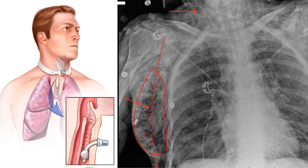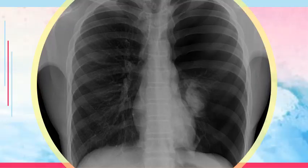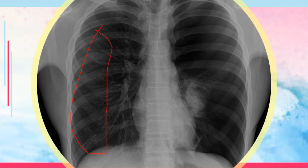A left pneumothorax shows abnormal deposits of air in the thoracic cavity. On the X-ray, the bronchioles cannot be easily seen on the affected side — unlike the normal side where branches of the main bronchi are visible. This is a result of atelectasis associated with left pneumothorax.